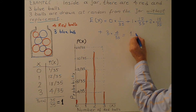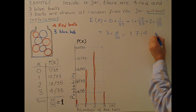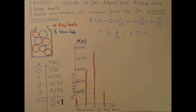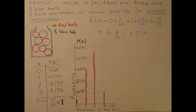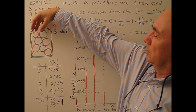So the expected number of red balls equals 0 times 1 over 35, plus 1 times 12 over 35, plus 2 times 18 over 35, plus 3 times 4 over 35. When we do this calculation, we get 1.714 balls. So the expected number of red balls is 1.714.